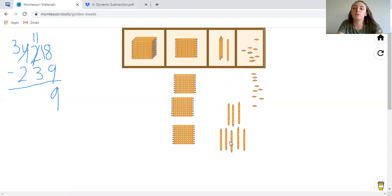And that leaves us with one, two, three, four, five, six, seven, eight. So 11 minus three is eight.